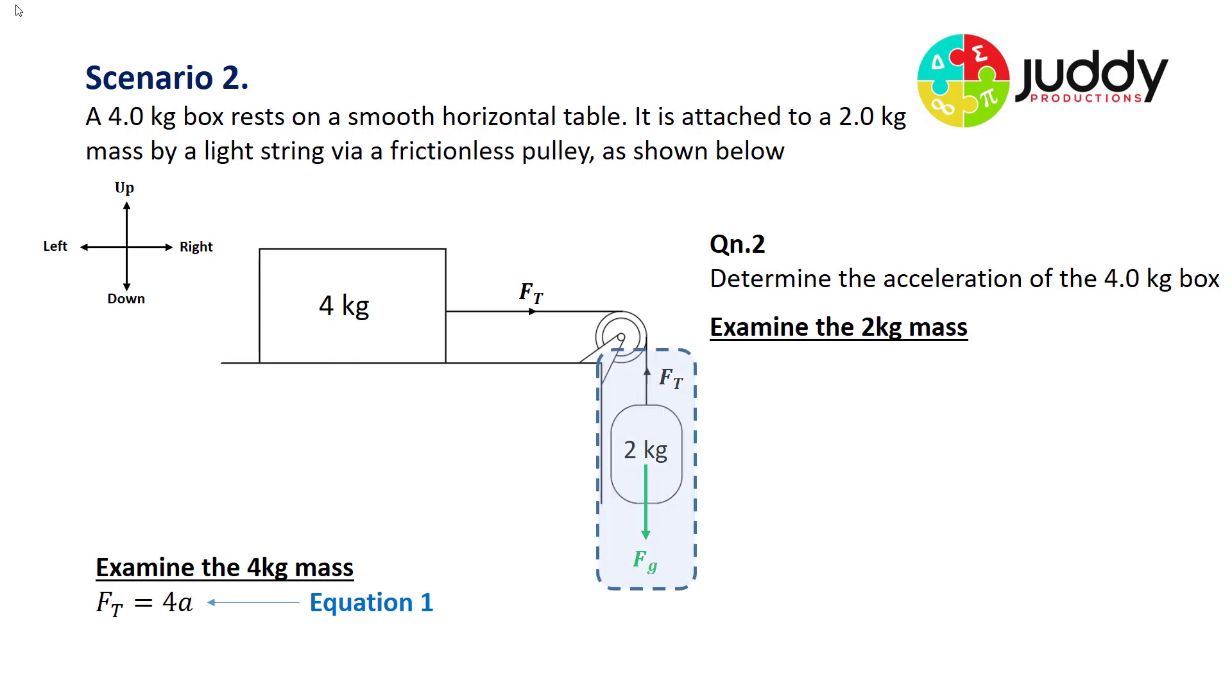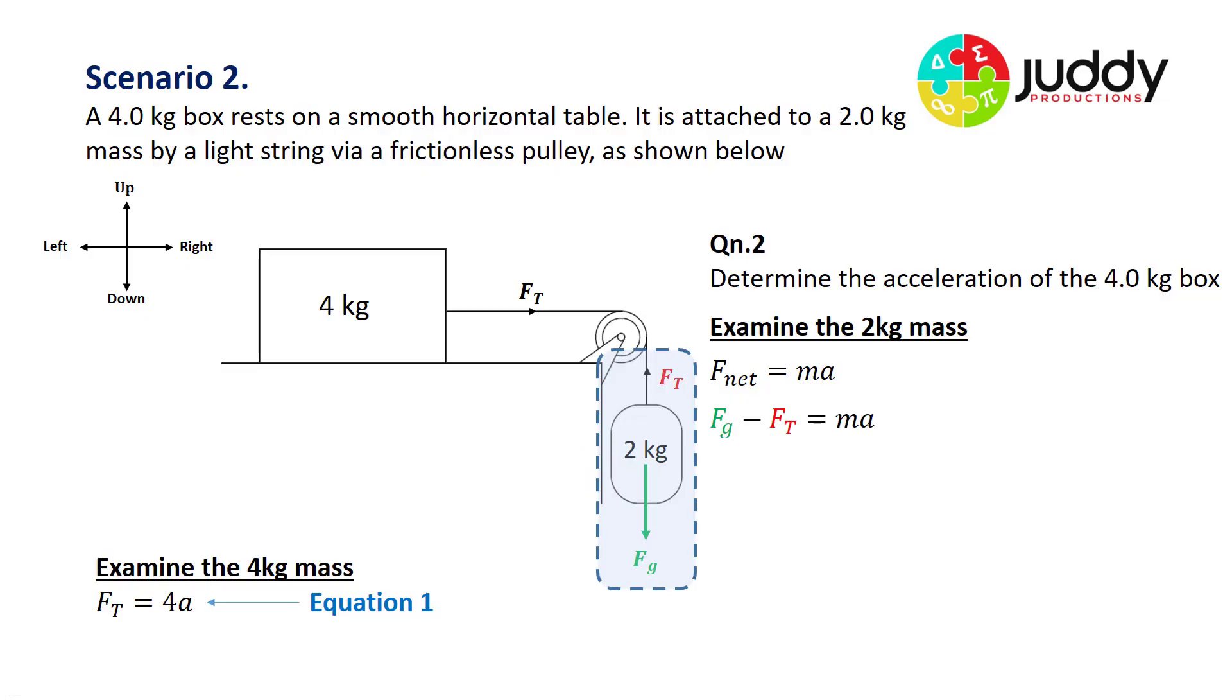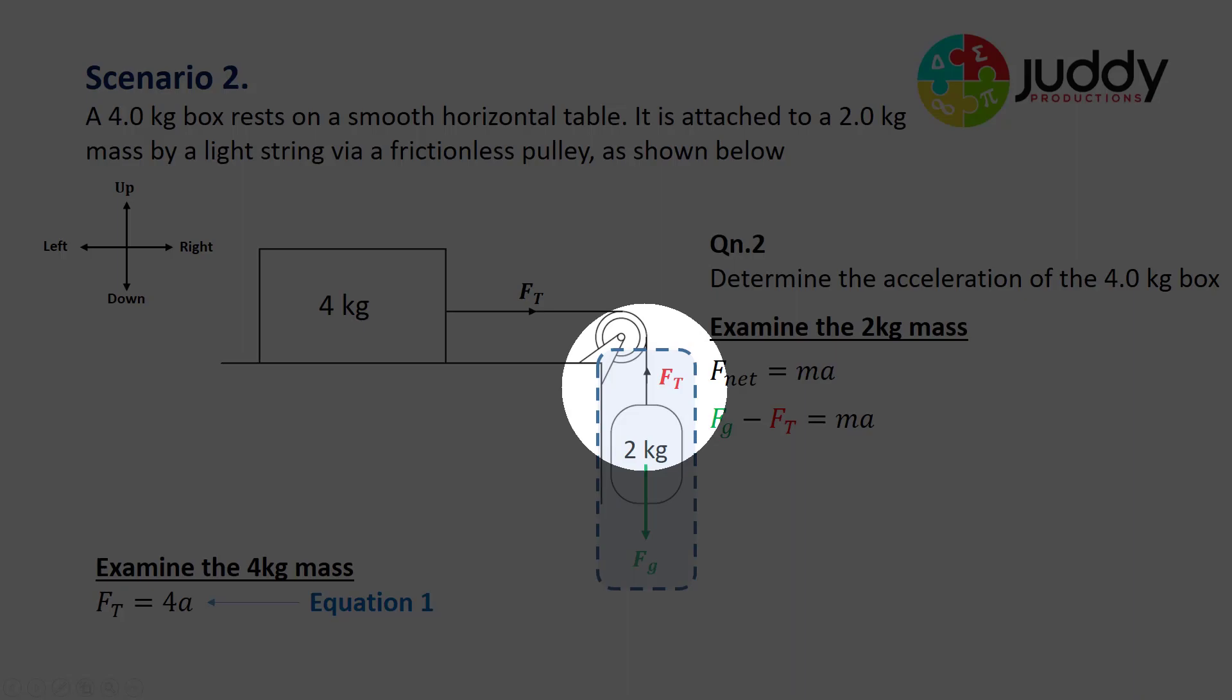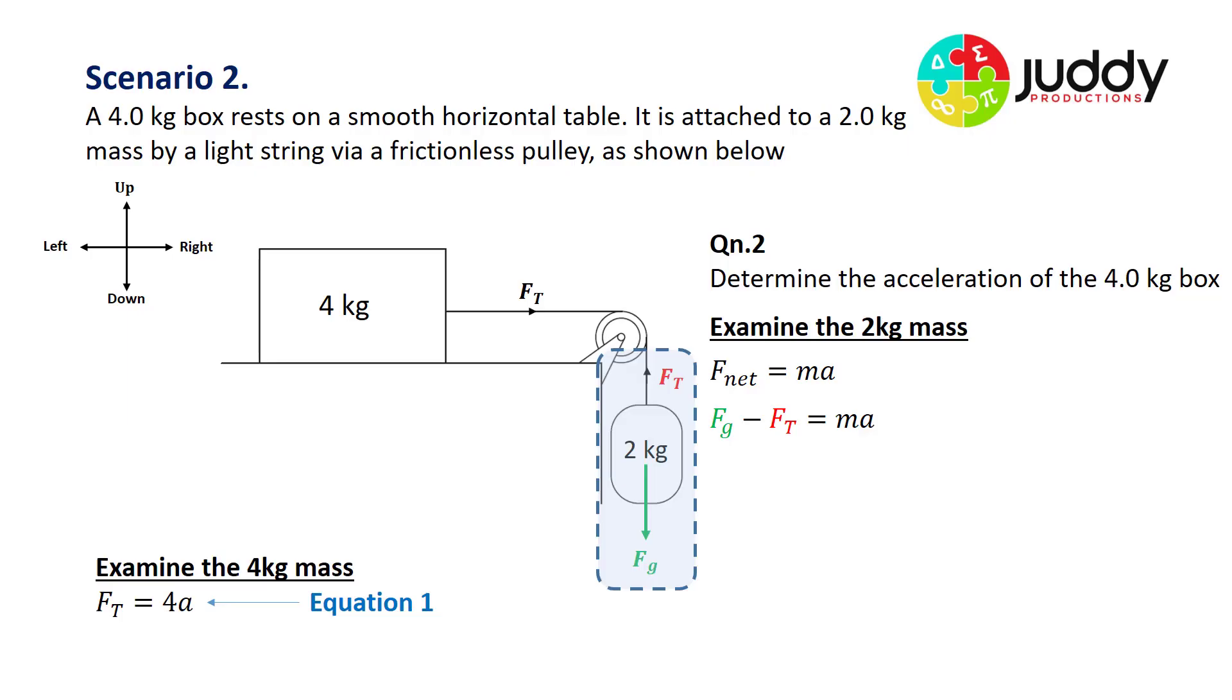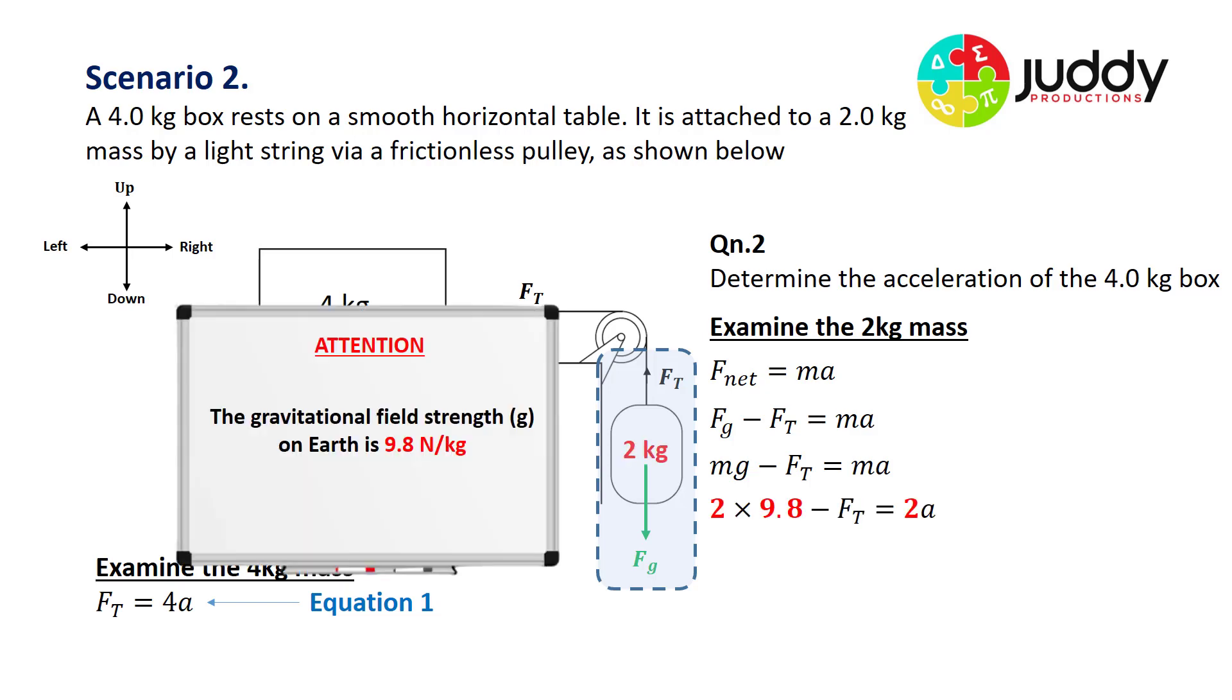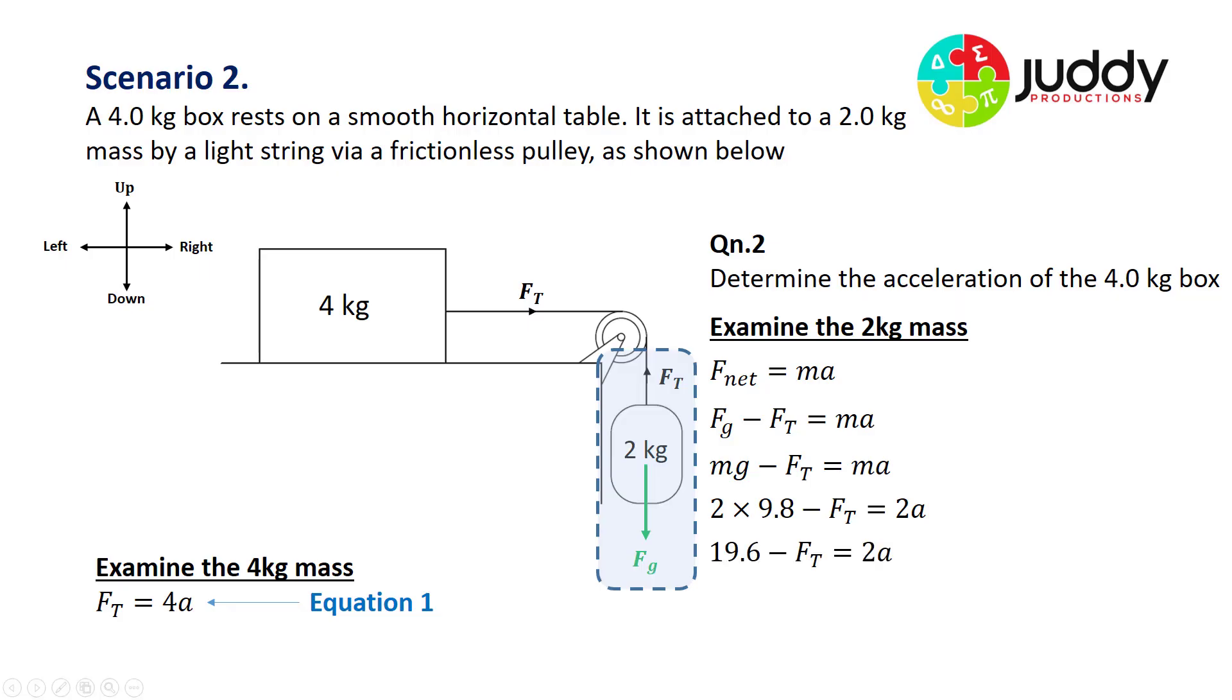Let's now examine the two kilogram mass. We see a net force acting downwards due to the opposing forces of gravity and tension. The difference of those forces produces the net force, which equals ma, Newton's second law. Fg equals mg, and the mass is two kilograms, gravity is 9.8 newtons per kilogram. Two times 9.8 gives us 19.6 take the force due to tension equals two times a.